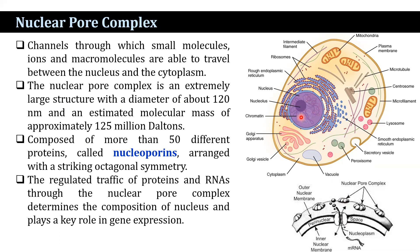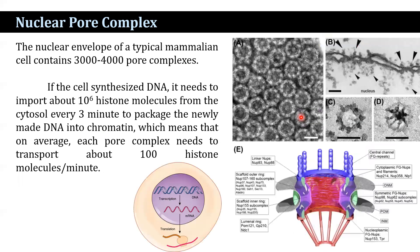The regulated traffic of proteins and RNAs through the nuclear pore complex determines the composition of the nucleus and plays a key role in gene expression. The nuclear envelope of a typical mammalian cell contains 3,000 to 4,000 pore complexes.